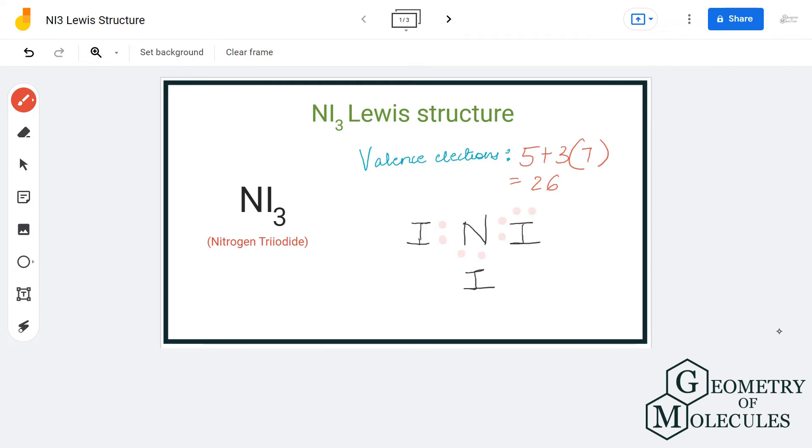If you look here closely, each iodine atom requires six valence electrons more to have a complete octet, so we will use six valence electrons around each iodine atom to help them have a complete octet. Let's place six valence electrons around this iodine atom, six for this one, and the remaining six for this one.